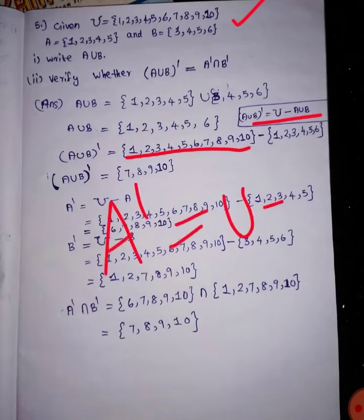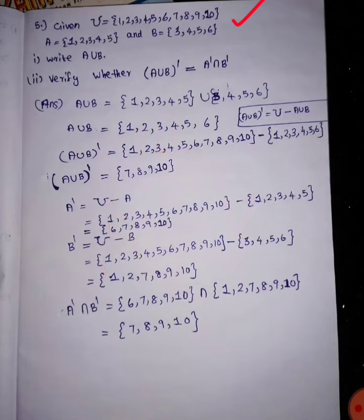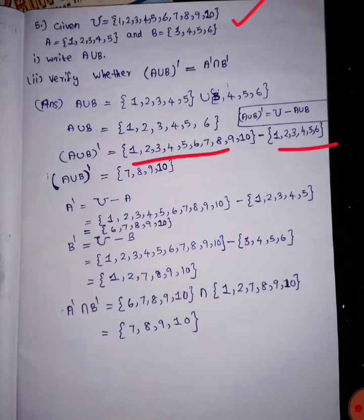Universal set minus A union B. Here we have A union B. Universal set minus A — that is A dash. Universal set minus A union B. So the elements here are 1, 2, 3, 4, 5, 6.